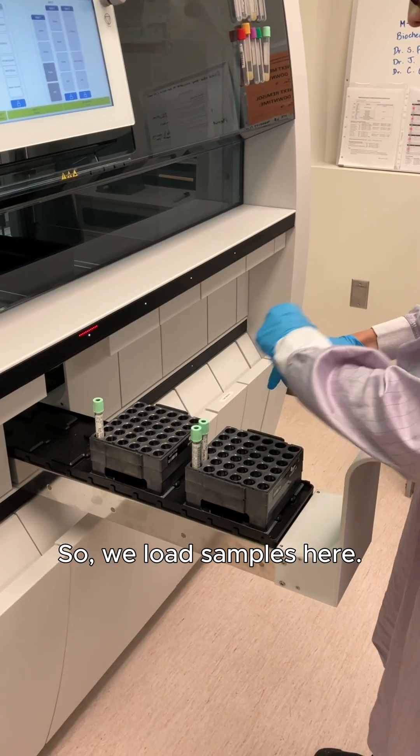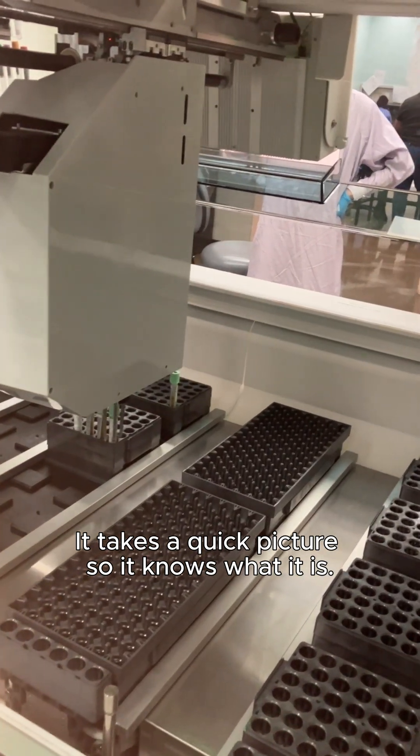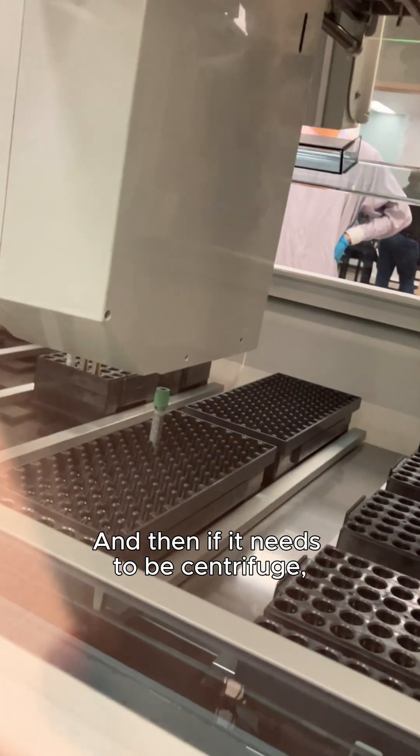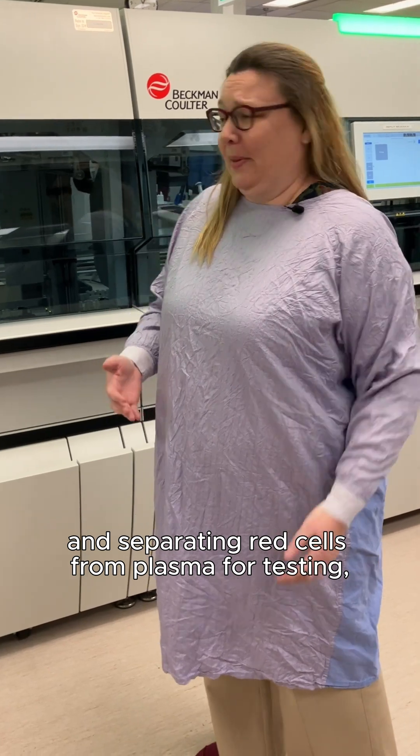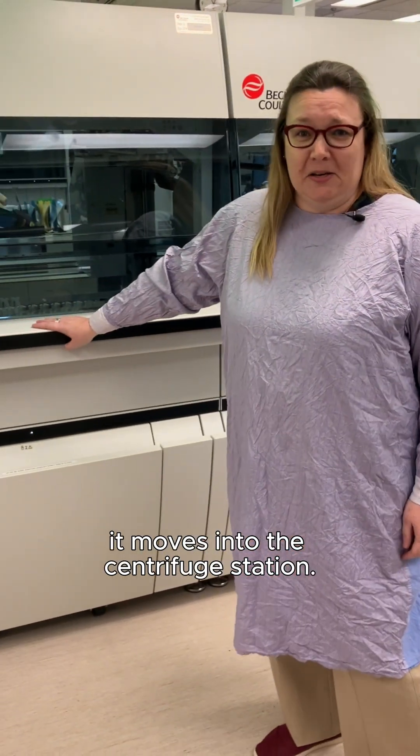So we load samples here. It takes a quick picture so it knows what it is. And then if it needs to be centrifuged, which is basically spinning the sample down and separating red cells from plasma for testing, it moves into the centrifuge station.